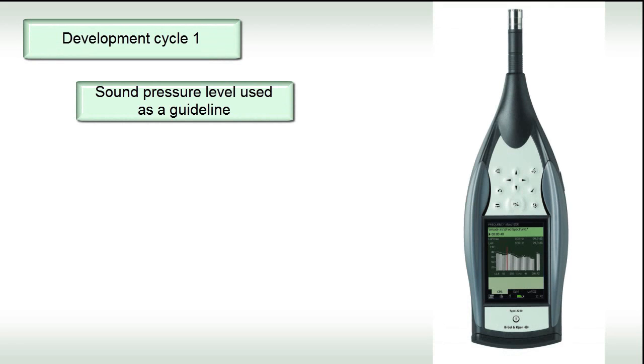When developing a product or machine, a typical noise guideline would be the sound pressure level measured in dBA at the operator's position. This can be measured using a sound level meter.